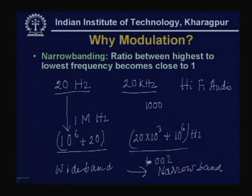This process is essentially narrowbanding. We are converting a wideband signal — wide in terms of the ratio of highest to lowest frequency — into a narrowband signal with a ratio of only 1.002. This allows very effective transmission using a suitable antenna, and narrowbanding is another benefit of modulation.